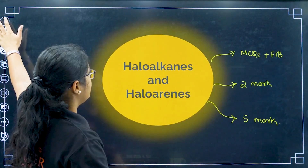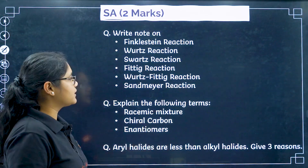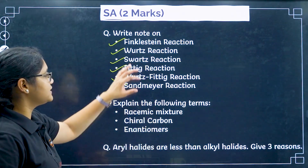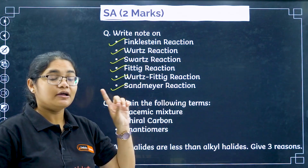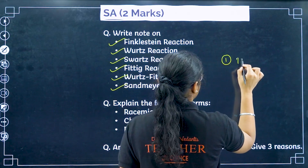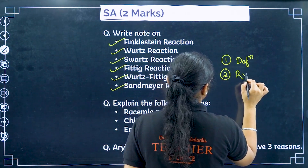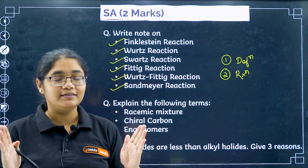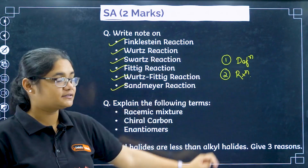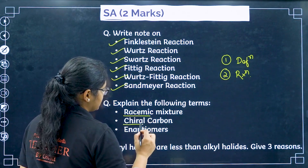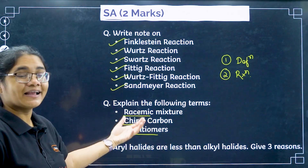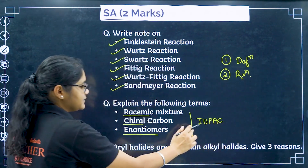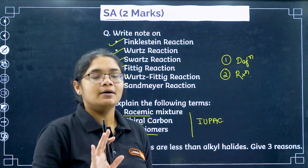For two-marker questions, name reactions can be asked: Finkelstein reaction, Wurtz reaction, Swartz reaction, Fittig reaction, Wurtz-Fittig, and Sandmeyer reaction. When writing name reactions for two marks, the first point should be the definition or statement, and the second point should be the reaction itself. You can also be asked to explain terms like racemic mixture, chiral carbon, and enantiomers. IUPAC nomenclature may also appear, though mostly in the MCQ section.